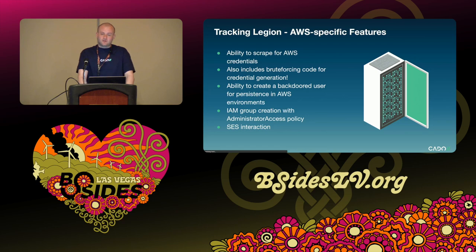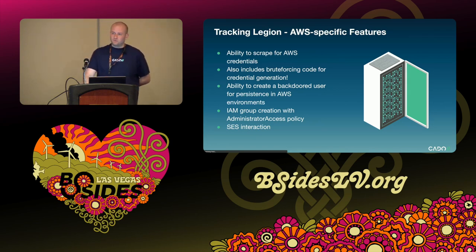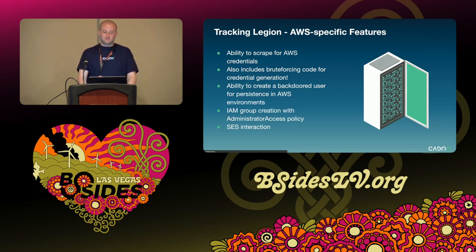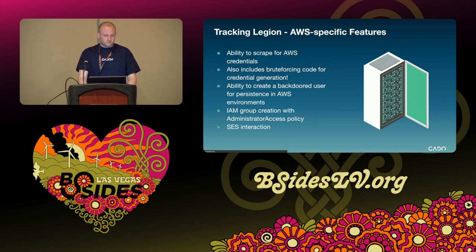The tool's ability to provide persistent access to an AWS environment is achieved by creating a malicious IAM user and inserting it into the target AWS account using the stolen credentials. An attacker-created IAM group is also added to the account, and the infamous AWS Administrator Access managed policy is then attached to this group. The IAM user ultimately inherits those permissions. With this in place, Legion can perform automated actions with Amazon's Simple Email Service, or SES.